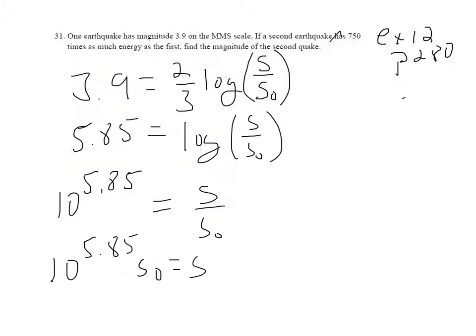So now they're telling me that the energy that the first quake has is 750 times the energy of the first, so that means it's 750 times this energy value. So 750 times 10 raised to the 5.85 S sub 0 is what the energy of the new quake is.